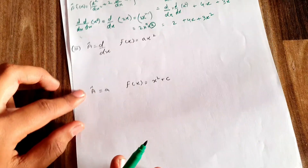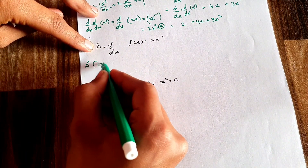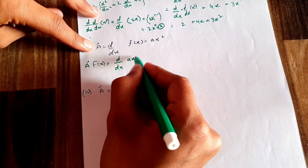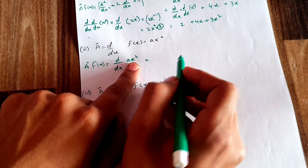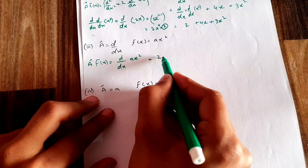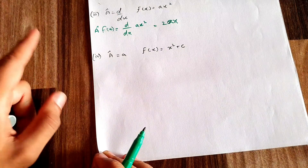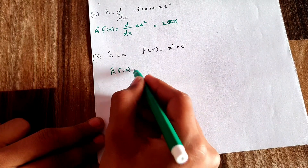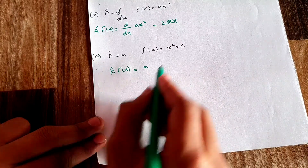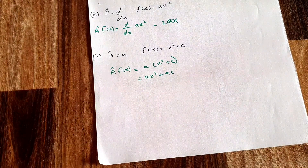Next example: apply operator d/dx on f(x) = ax². Since a is a constant it has no derivative, so d/dx(ax²) = 2ax. Another example: apply operator A on f(x) = x² + c, giving A·f(x) = A(x²) + A(c) = ax² + ac. These were examples of multiplying an operator with a function.